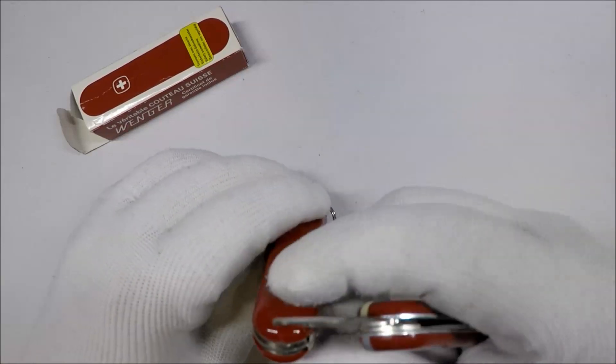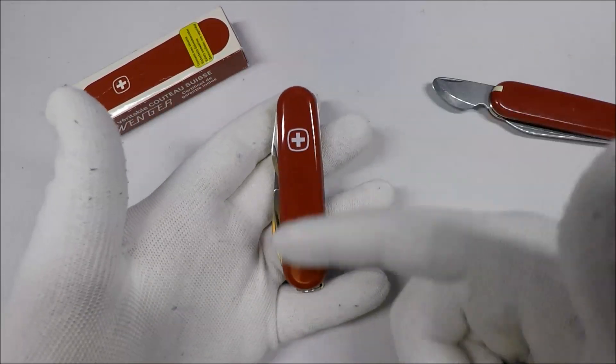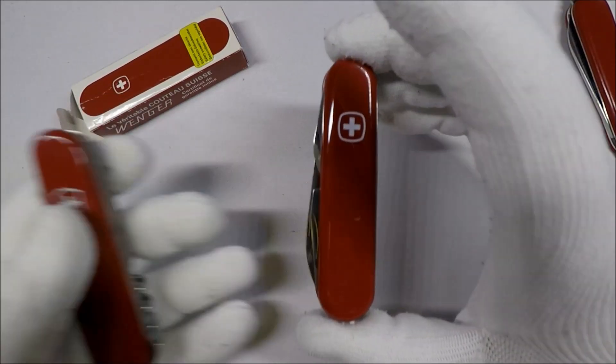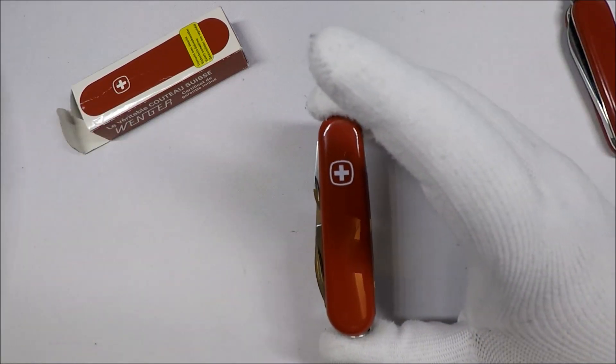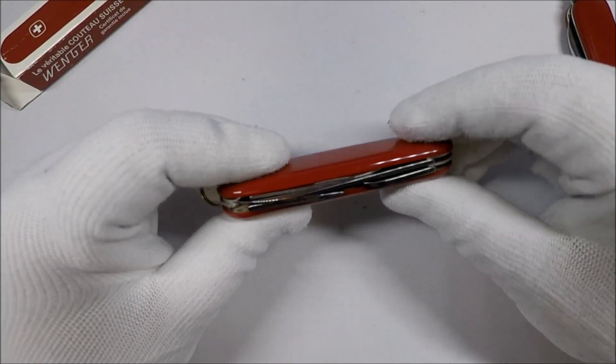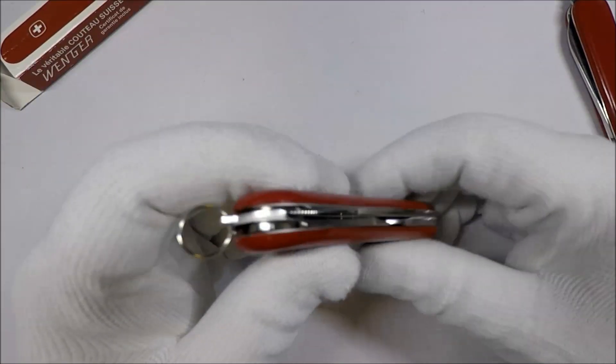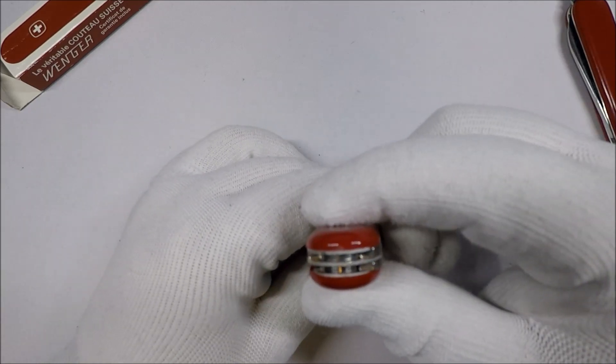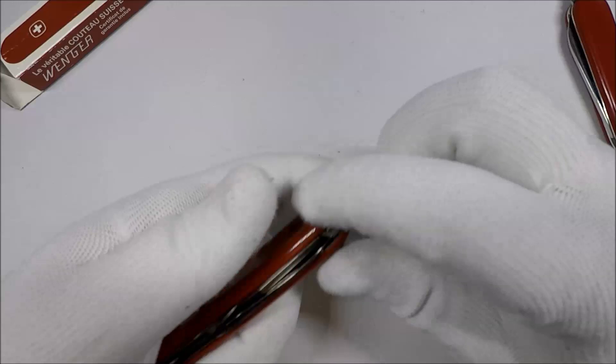So a couple of things, this is an 85 millimeter Wenger as compared to the usual 91 of the Victorinox and this knife, if you look, it lacks any toothpick or tweezers which is common on a lot of knives. Let's take a look at the various features of this thing.